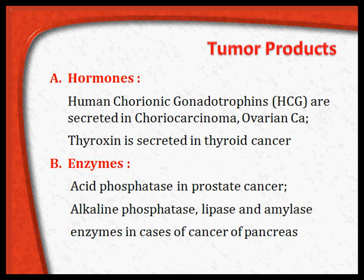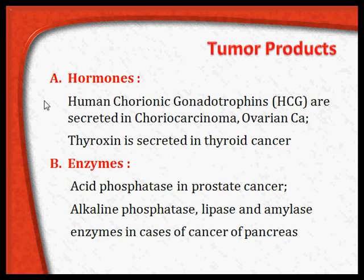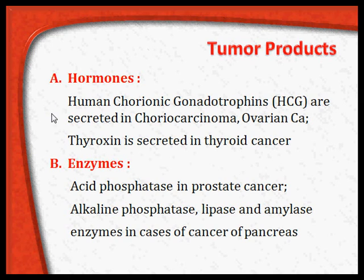Sometimes there may not be tumor antigens but rather tumor products or output from the tumors. For example, hormones: human chorionic gonadotropin (HCG) is present only in pregnant women, but if HCG levels are found in higher concentrations it suggests choriocarcinoma or ovarian cancer. Thyroxin is normally secreted by the thyroid gland, but it is secreted in excess when there is thyroid cancer, producing hyperthyroidism.